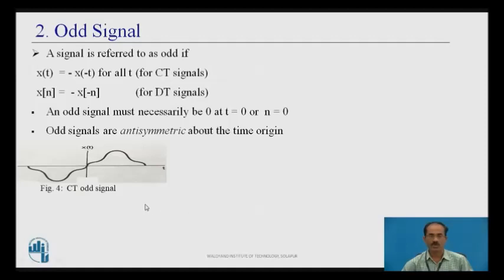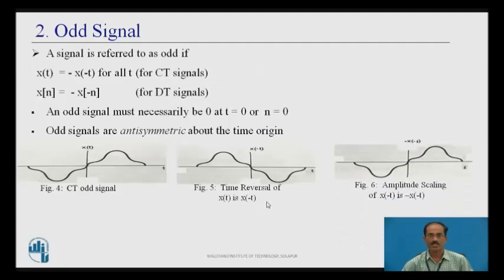The given x(t) is an odd signal. We find x(-t), the time reversal or mirror image of this signal. Next, we find -x(-t), which is amplitude scaling by -1. That means the signal present above the x-axis will shift below, and the signal below will shift above. Since x(t) and -x(-t) are the same, therefore it is an odd signal.